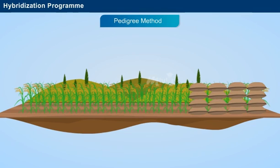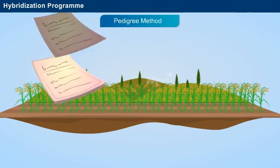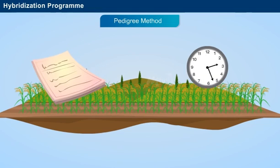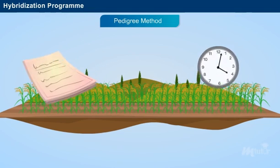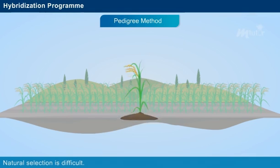Disadvantages of the pedigree method: maintenance of pedigree records consumes more time, natural selection is least possible, and the desired success depends greatly on the skill of the laborers.